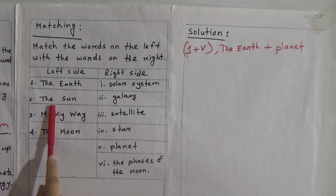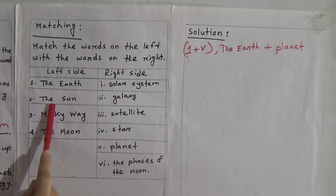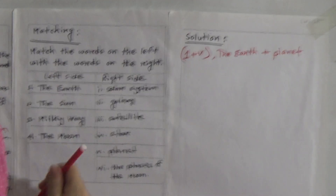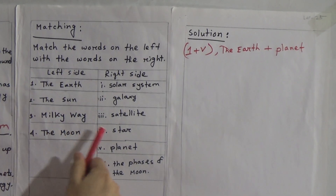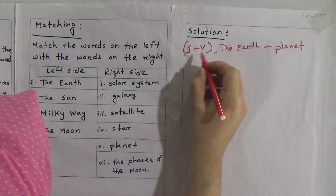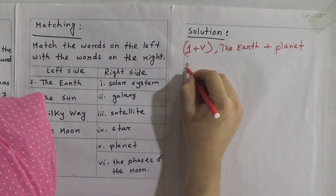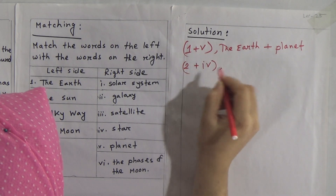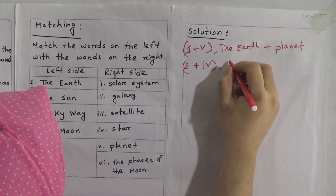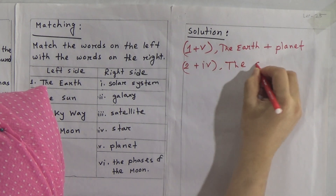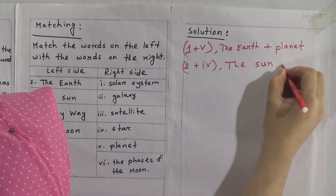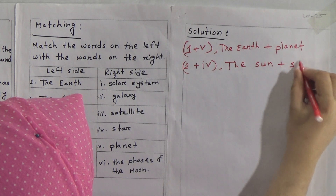Dear students, from the book we know the Sun is a star. So number two on the left will be matched with number four on the right. Write '2 plus 4'. The Sun is matched with star.